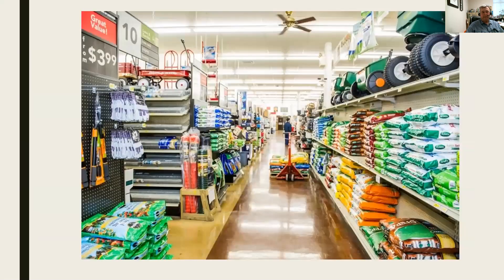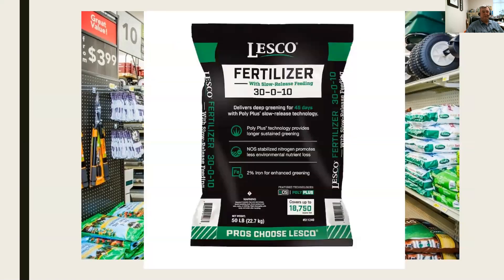So they get ready, go down to the garden center, and peruse all of the fertilizer offerings. After looking everything over closely, they purchase a particular bag of fertilizer. From the label, we can see it is a 30-0-10 analysis fertilizer. As a reminder, those three numbers always represent nitrogen, phosphorus, and potassium — so 30% nitrogen, zero phosphorus, and 10% potassium in this 50-pound bag.